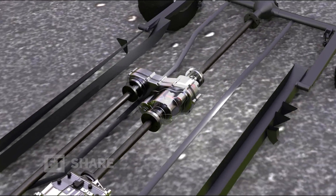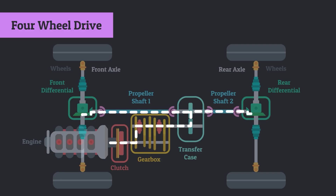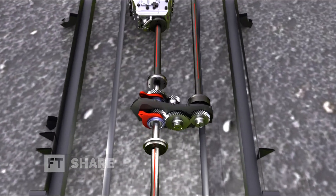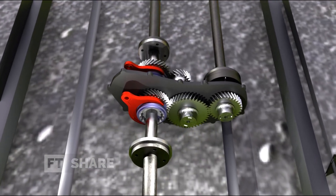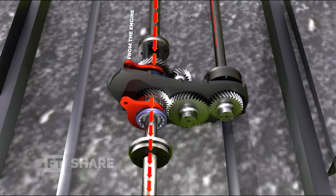Let's dive into its working mechanism. When the vehicle is in motion, after the engine generates power which is processed by the transmission, this power is then directed to the transfer case for further processing, meaning the user can control the transfer case according to road conditions. For example, the transfer can be deactivated when driving on asphalt, meaning the power will go directly to the rear wheels.